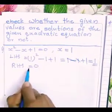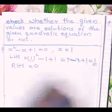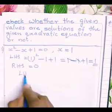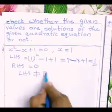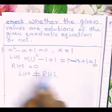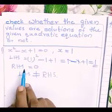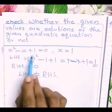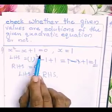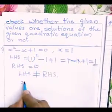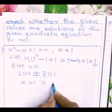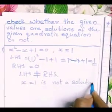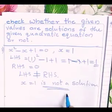RHS equals 0. LHS you got as 1, RHS equals 0. LHS is not equal to RHS. We got different values for LHS and RHS by substituting x = 1 in the given equation. Therefore, x = 1 is not a solution of the given quadratic equation.